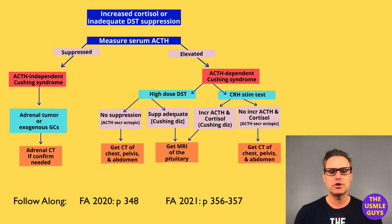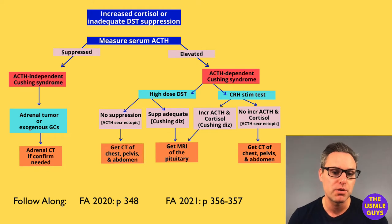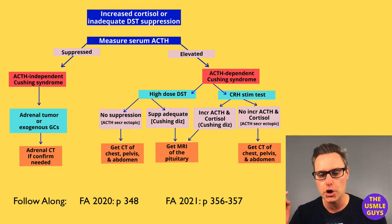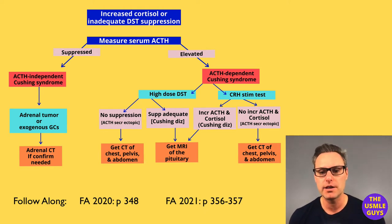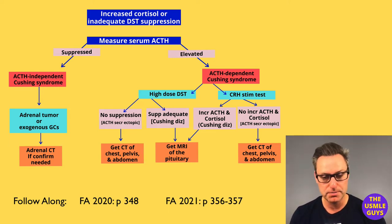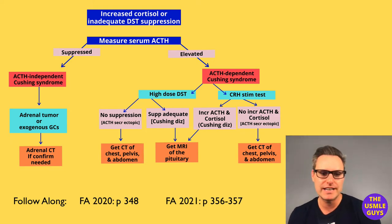In those with Cushing disease caused by the pituitary, the high-dose dexamethasone suppression test is often suppressed, while ectopic sources are not, giving us a way to differentiate between the two. If we give high-dose dexa and get suppression, we can assume a pituitary cause and get imaging of the pituitary for confirmation. If no suppression occurs, the source is ectopic, and we need to do more digging to find it.